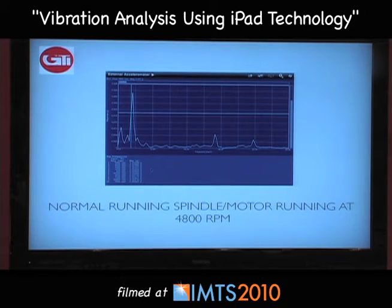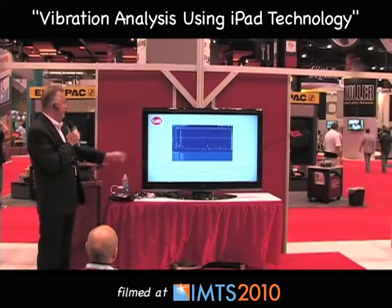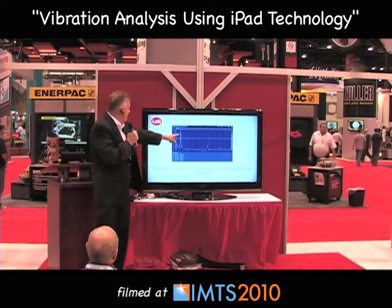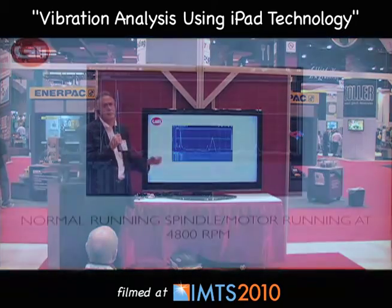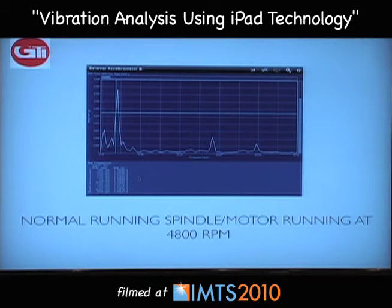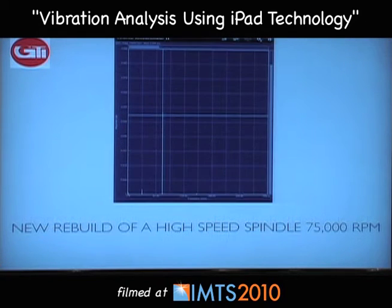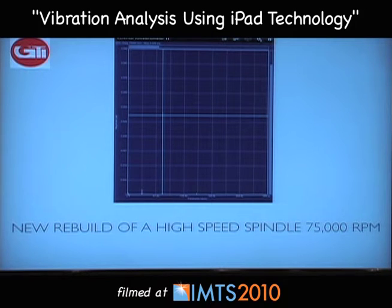Here's what our application looks like on screen in real life. This is a normal running spindle motor at 4,800 RPM, and as you can see, you can very easily find the running speed — in a good running unit, that should be your highest point. Bearing levels and misalignment levels should never run above running speed. Here's a new rebuild we did and took a reading of a 75,000 RPM spindle. This analyzer goes all the way up to 24k hertz, which is 1.4 million CPM, so we cover the whole spectrum of the analysis.